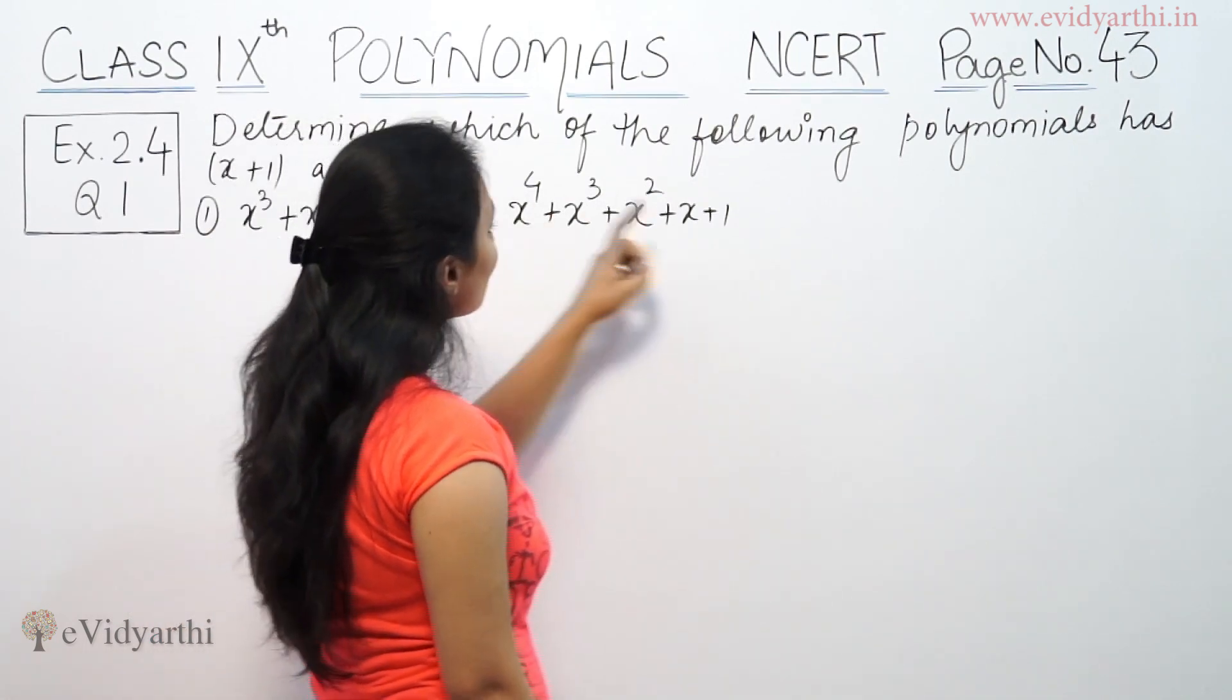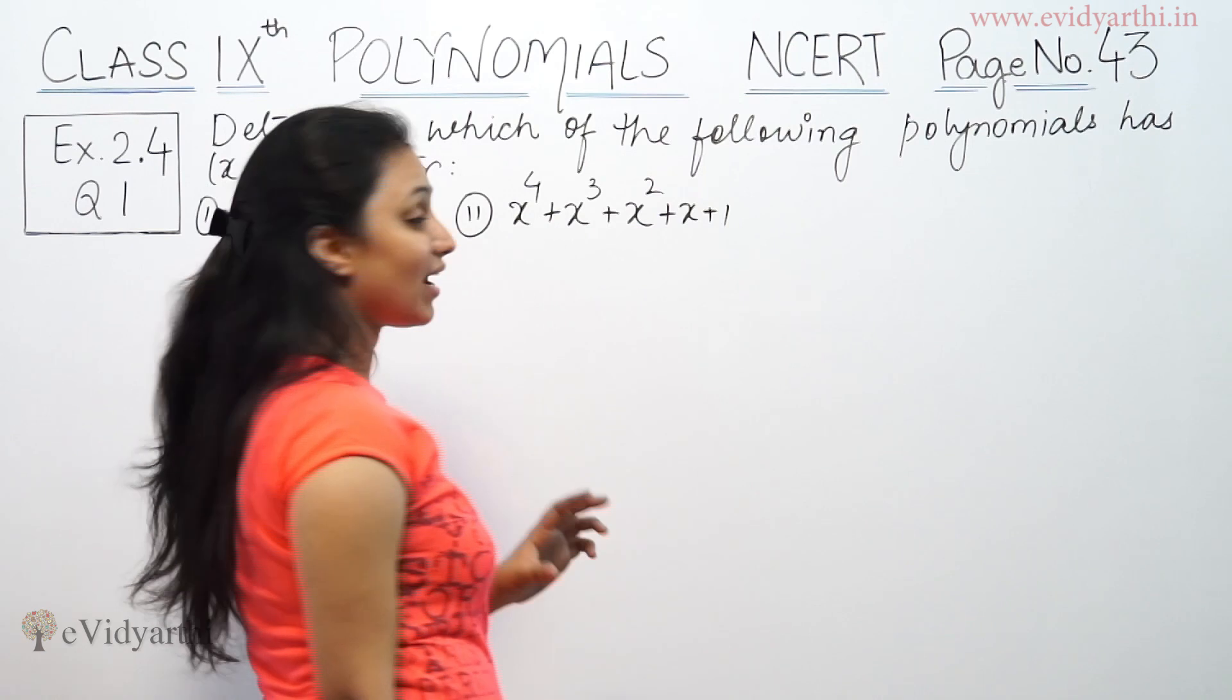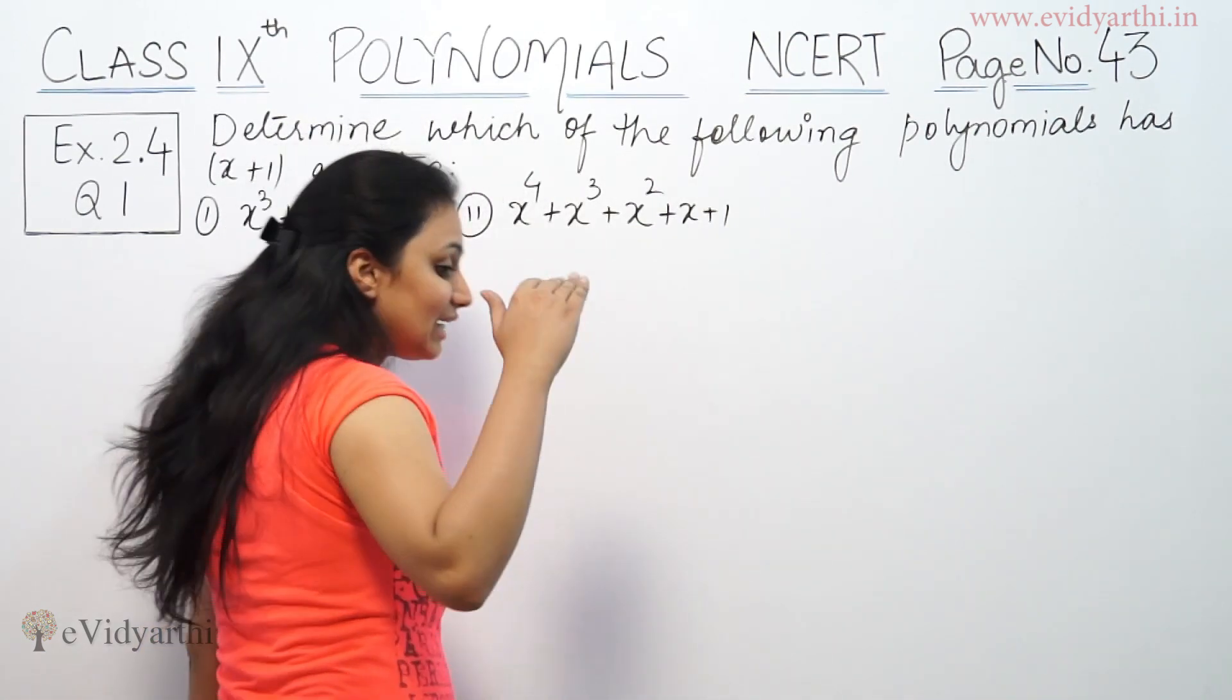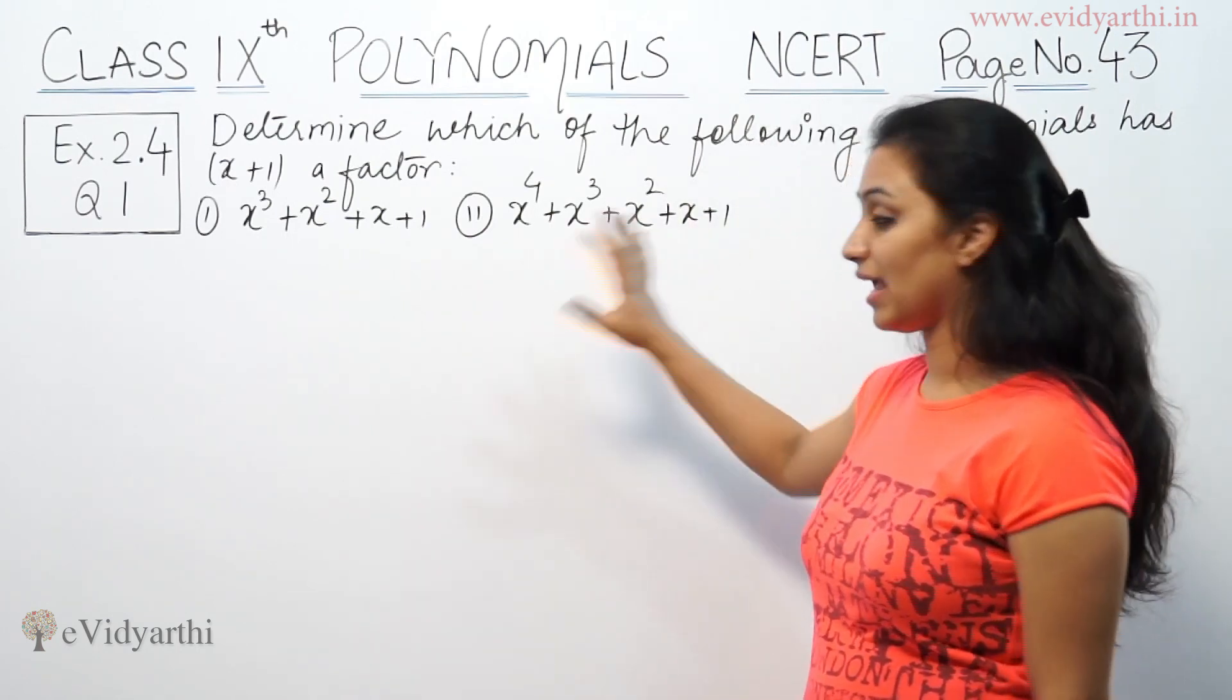This says, determine which of the following polynomials has x plus 1 as a factor. So, if it is completely divided with remainder 0, then it is a factor, otherwise not.